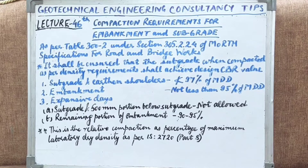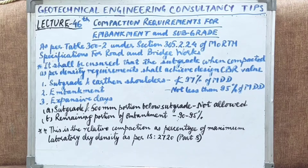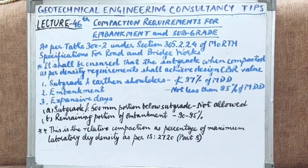Based on the modified proctor test as per Indian Standard code IS 2720 Part 8, the bare minimum compaction requirements to be achieved are: for subgrade and shoulders, it should not at all be less than 97 percent of the MDD; for embankments, it should not be less than 95 percent of the MDD.